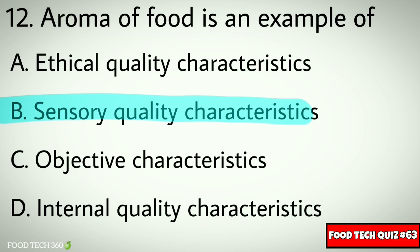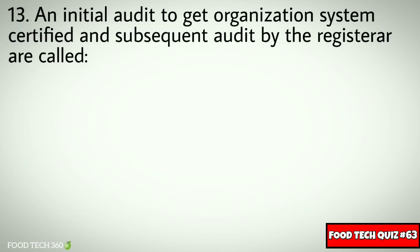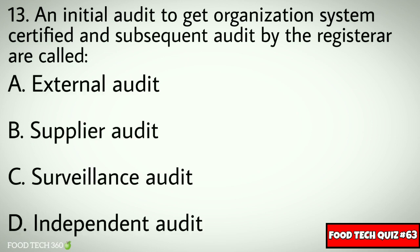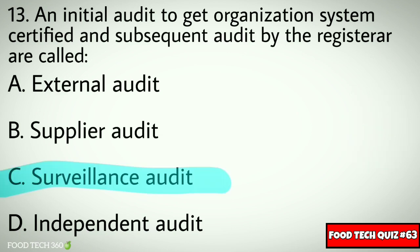Question No. 13. An initial audit to get an organization's system certified and subsequent audit by the registrar are called: Options: A. External Audit, B. Supplier Audit, C. Surveillance Audit, D. Independent Audit. Correct answer: C. Surveillance Audit.